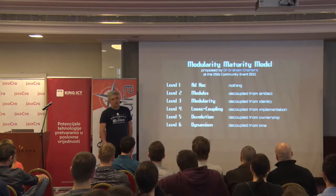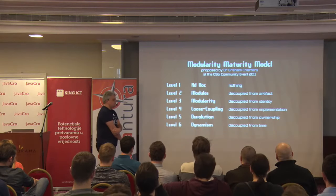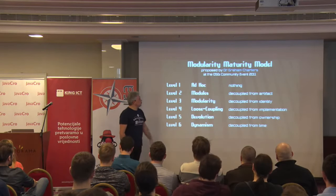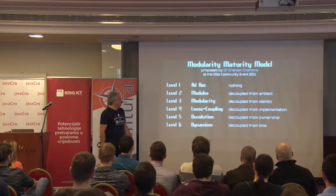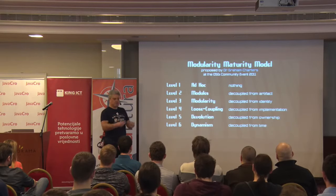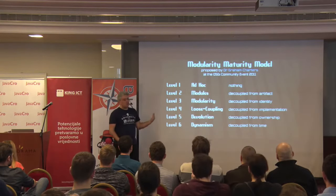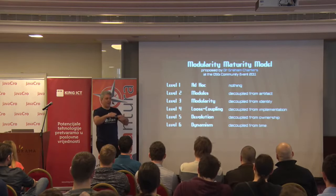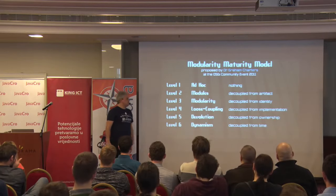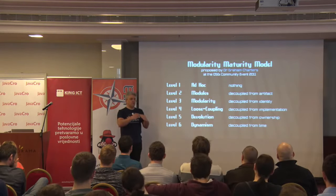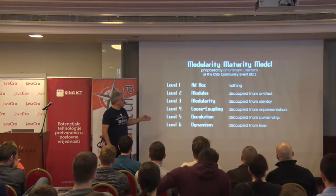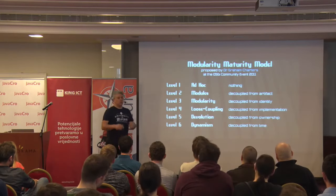Dr. Graham Charters proposed a modularity maturity model several years ago at the OSGi community event. It has six levels. Level one is ad hoc, where you have no modularity at all. Level two gives modules an identity decoupled from the artifact. Level three decouples from identity, using rule-based relationships. Level four is loose coupling, an abstraction layer that decouples you from the implementation. Level five is devolution, decoupling from ownership. The final level is dynamism — decoupling from time — meaning you acknowledge that things will change and prepare to deal with that change.